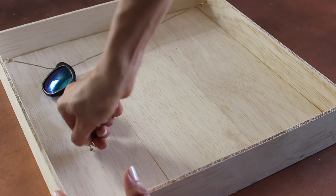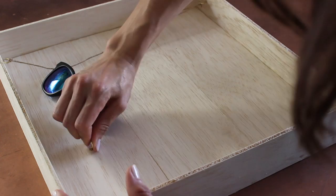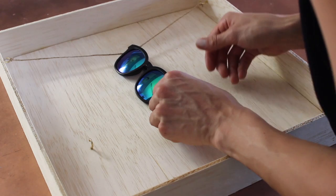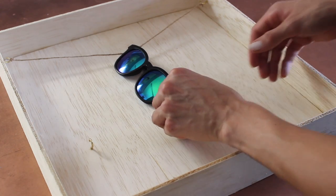I then screwed in three more eye hooks to the back of the board near the bottom for my keys. I put some sunglasses on there to measure to make sure it's not overlapping with one another.